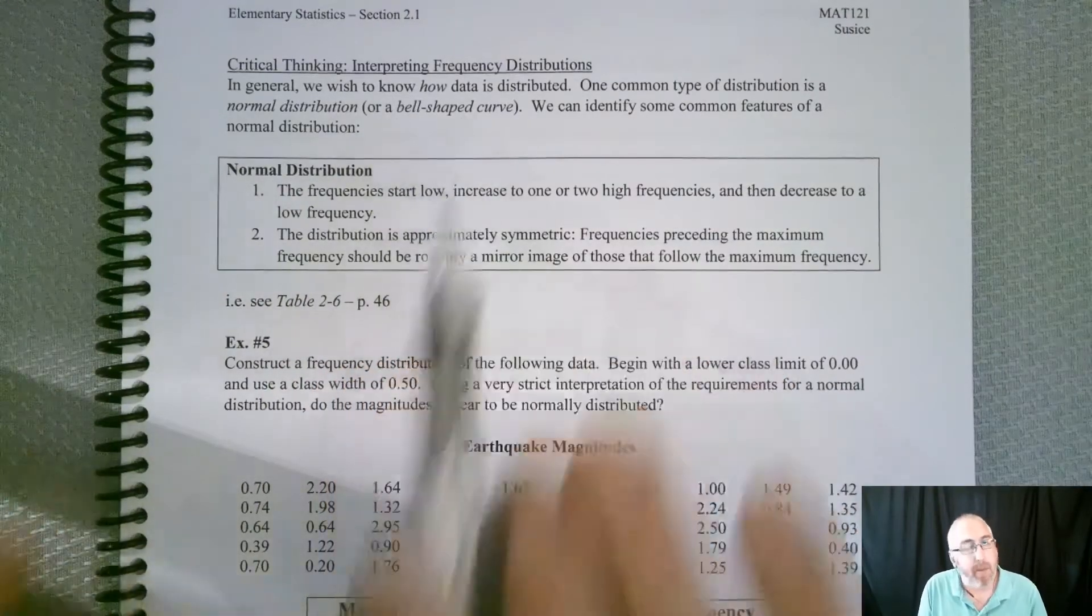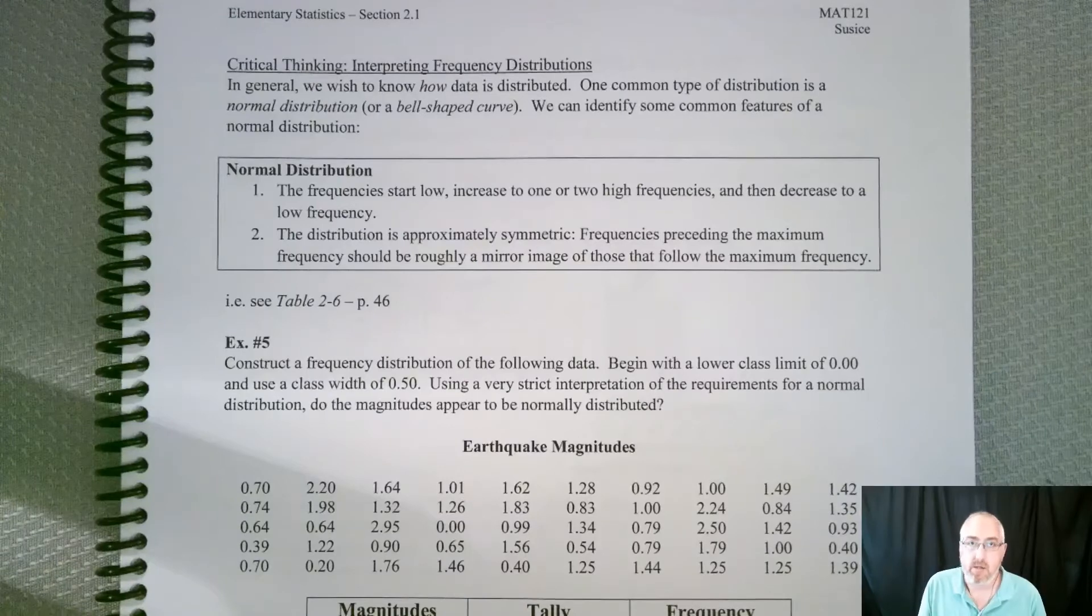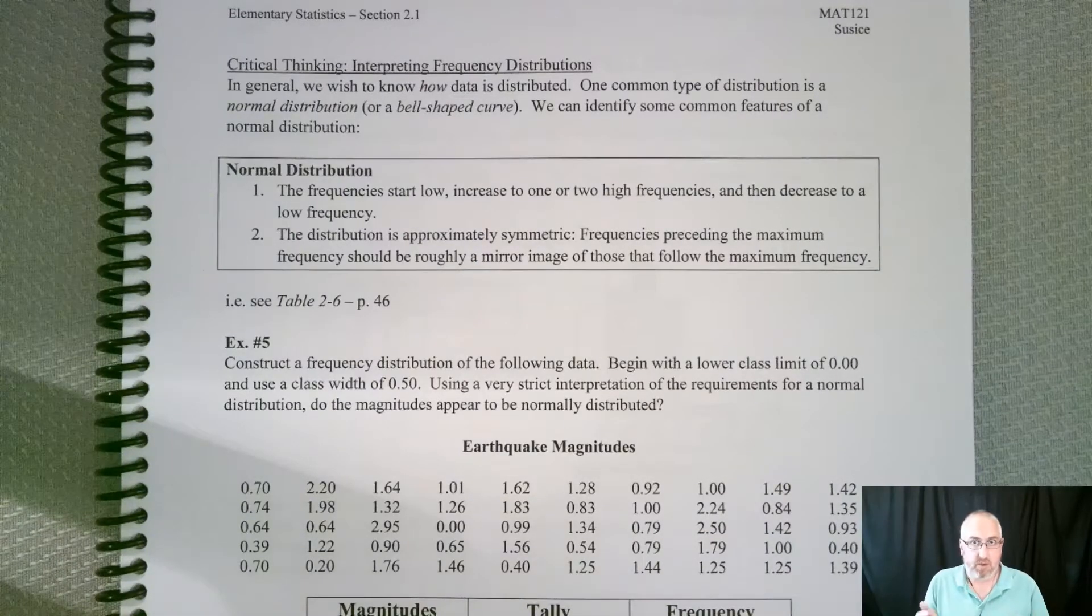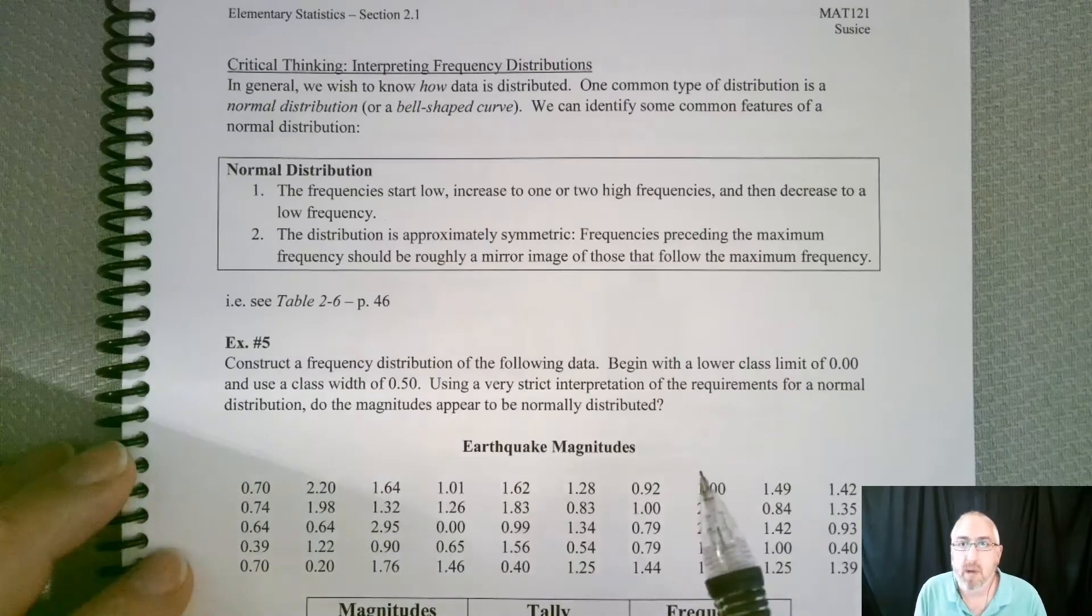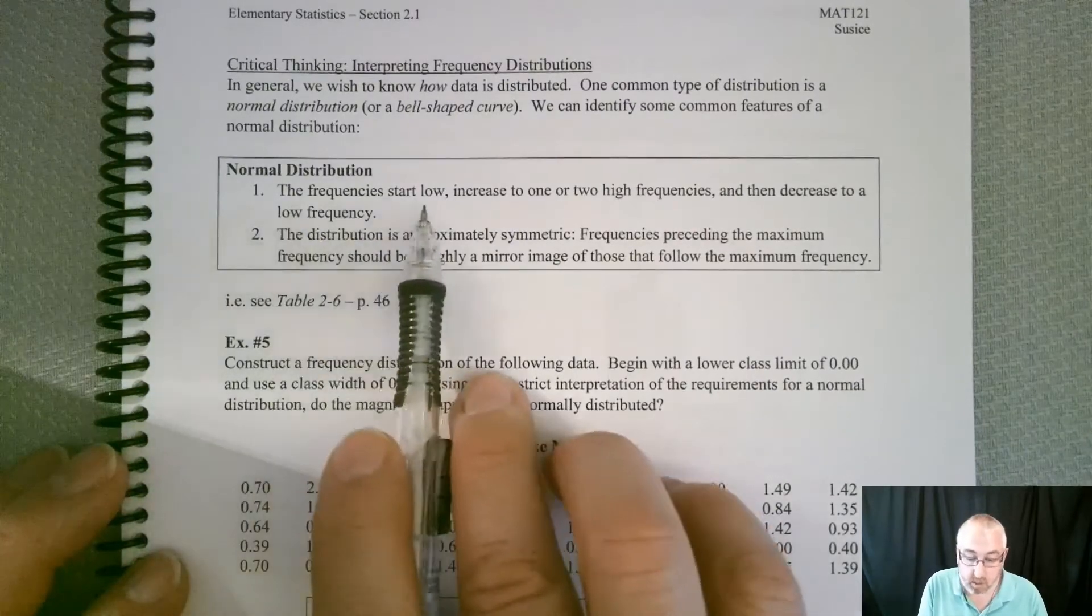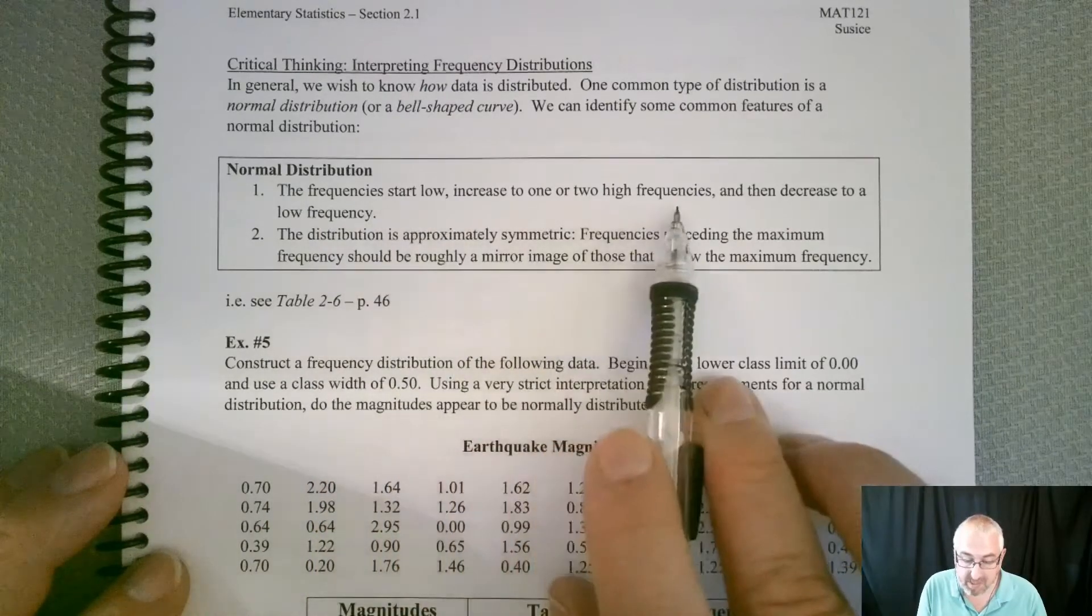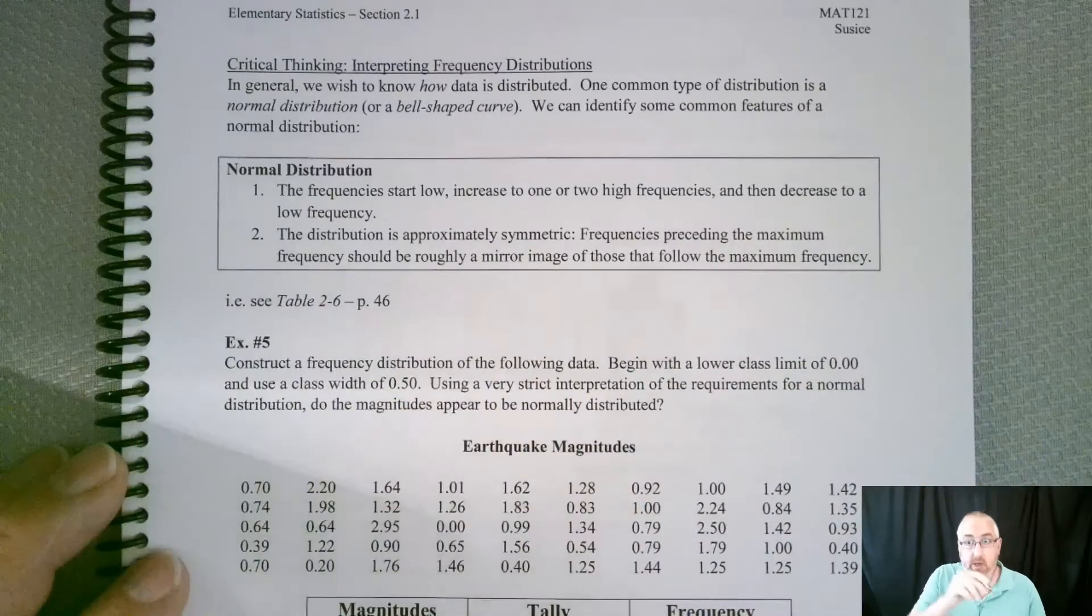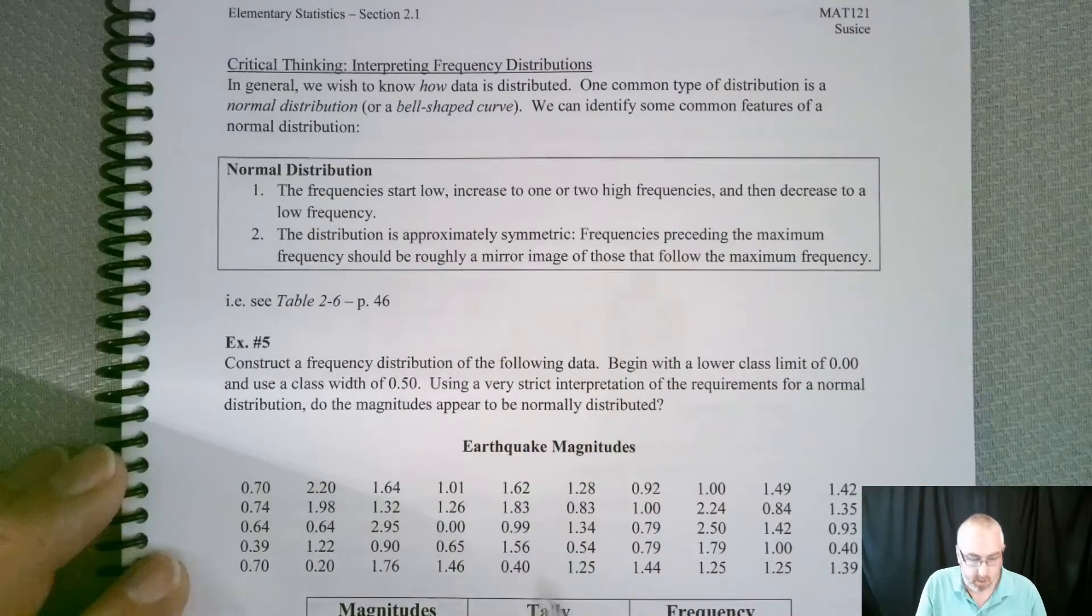One common type of distribution is a normal distribution, or a bell-shaped curve. So you've probably heard of that somewhere before, but anytime you hear normal, think bell-shaped, or vice versa. So it kind of goes up and then down.